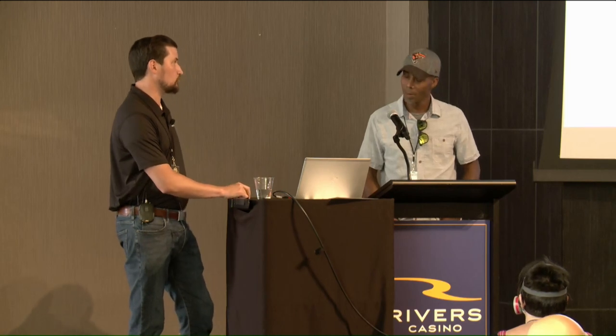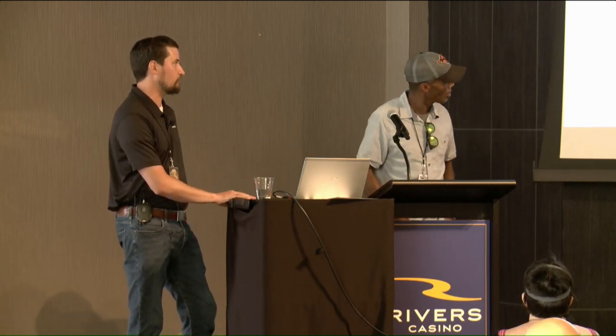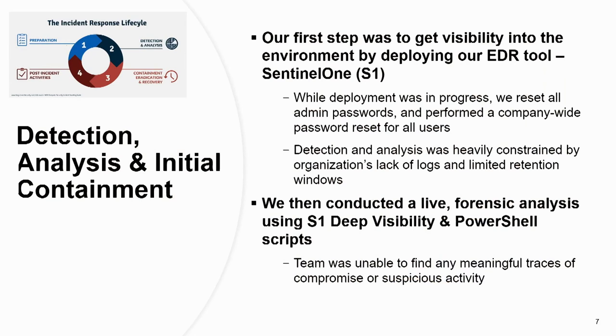We started our forensic process using two tools: native PowerShell scripts for collecting forensic evidence and doing live analysis of systems — checking processes for anything suspicious, anywhere they were trying to obfuscate their presence — and through SentinelOne there's a module called Deep Visibility, which is a way to do threat hunting and see if there's anything suspicious. But once again, we couldn't find any sort of trace of compromise or suspicious activity, and we weren't getting pointed in any direction.